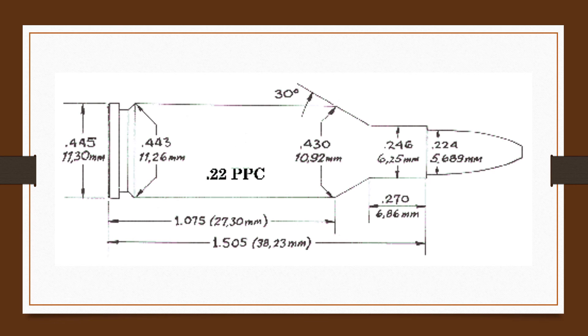This definitely places the .22 PPC in the varmint small game class. A 1 in 14 twist has become pretty much the standard for these barrels, although 1 in 12 twist will sometimes be found.